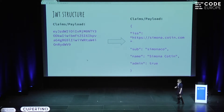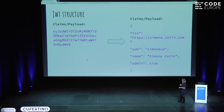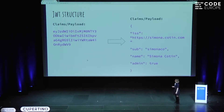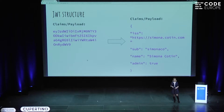You can store different types of data that are meaningful for your application — things like the name, or even authorization information like whether your user is an admin or not. One thing to keep in mind is that this string is base64 encoded, so it's not encrypted. If I take this string and copy it into any base64 decoder, I will get the plain text, which means we should not store sensitive data like passwords or anything personal that we don't want others to see.